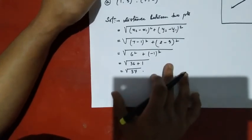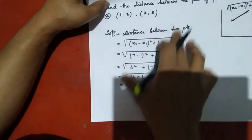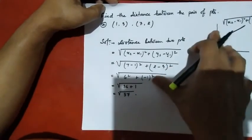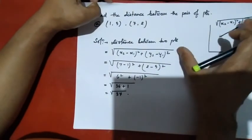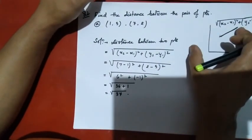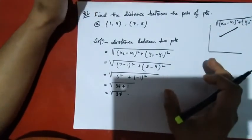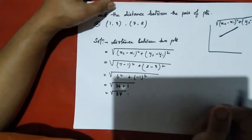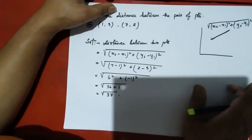The answer is square root of 37. We have used the distance formula to find the distance between two points in coordinate geometry.